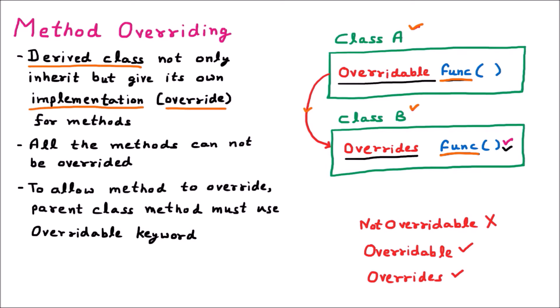For example, suppose class A has a function that computes A plus B. Now the same function is available in class B but it multiplies A into B. So that is perfectly possible - both names are same, types are same, arguments are same, but they are doing different tasks. That is called different implementation, and that is perfectly possible.